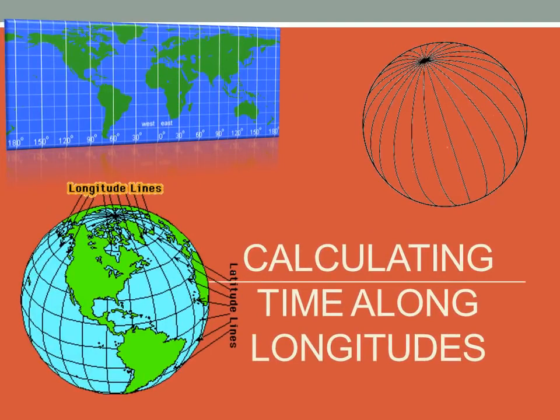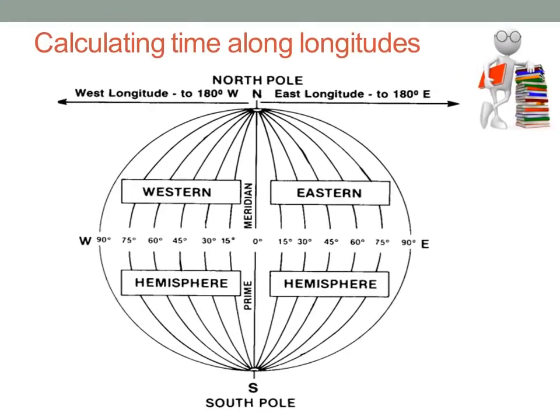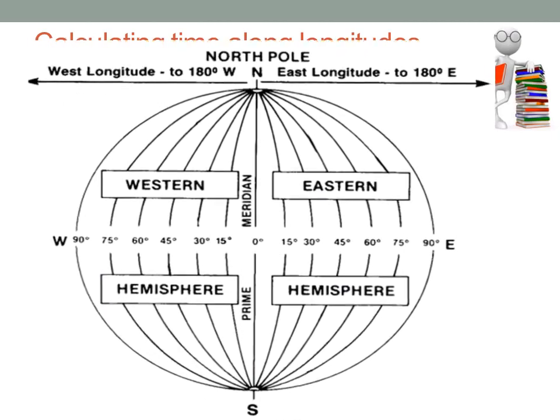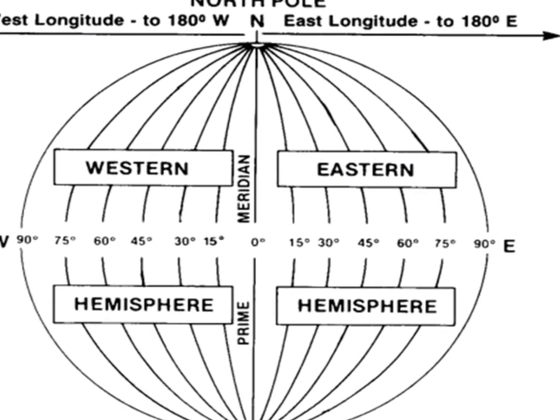Before we begin, let us establish some basic facts about lines of longitude. Lines of longitude, also called meridians or parallels of longitude, run from the north pole to the south pole. The main line of longitude, which is the Greenwich or prime meridian, divides the earth into the eastern and western hemispheres.